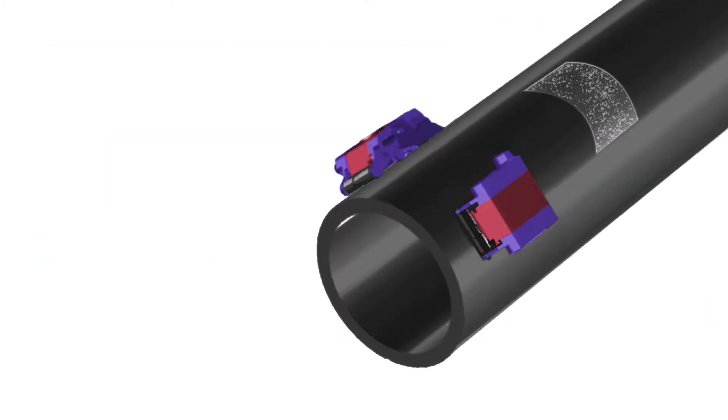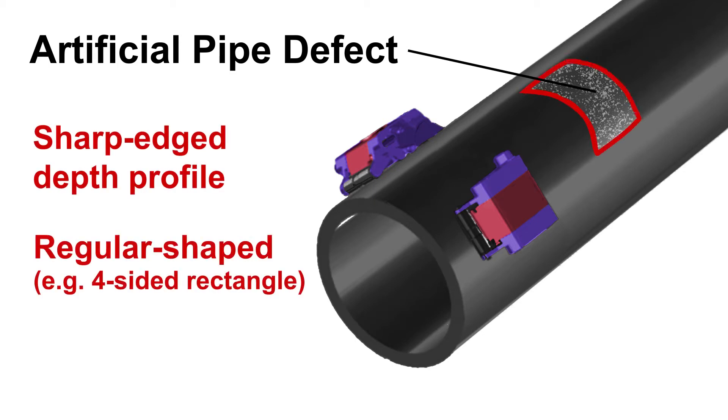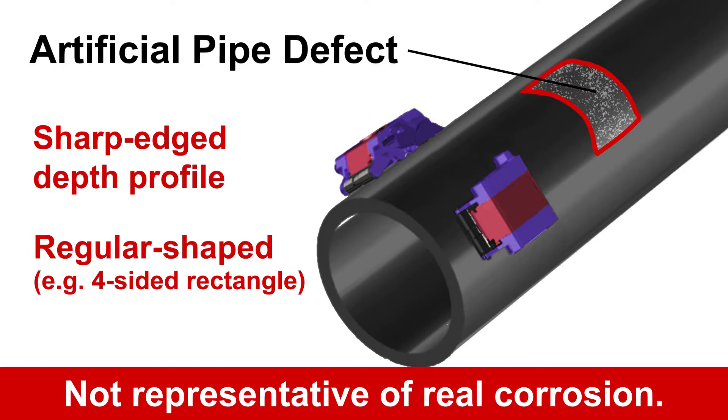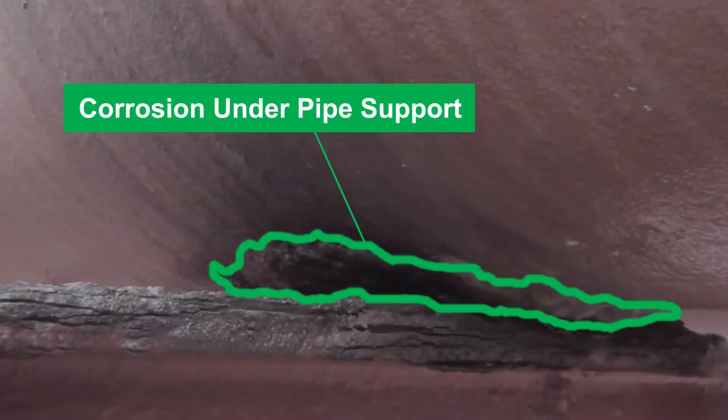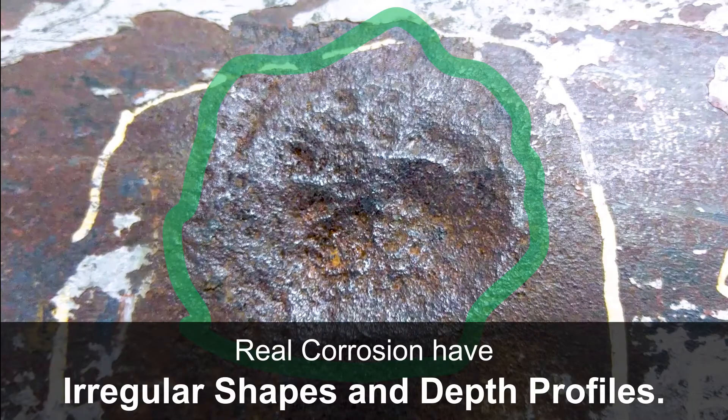Most amplitude-based products would be able to detect artificial pipe defects with sharp edges and regular shapes. However, this type of defect does not represent real corrosion in the field. In practice, real corrosion defects generally have irregular shapes and depth profiles.